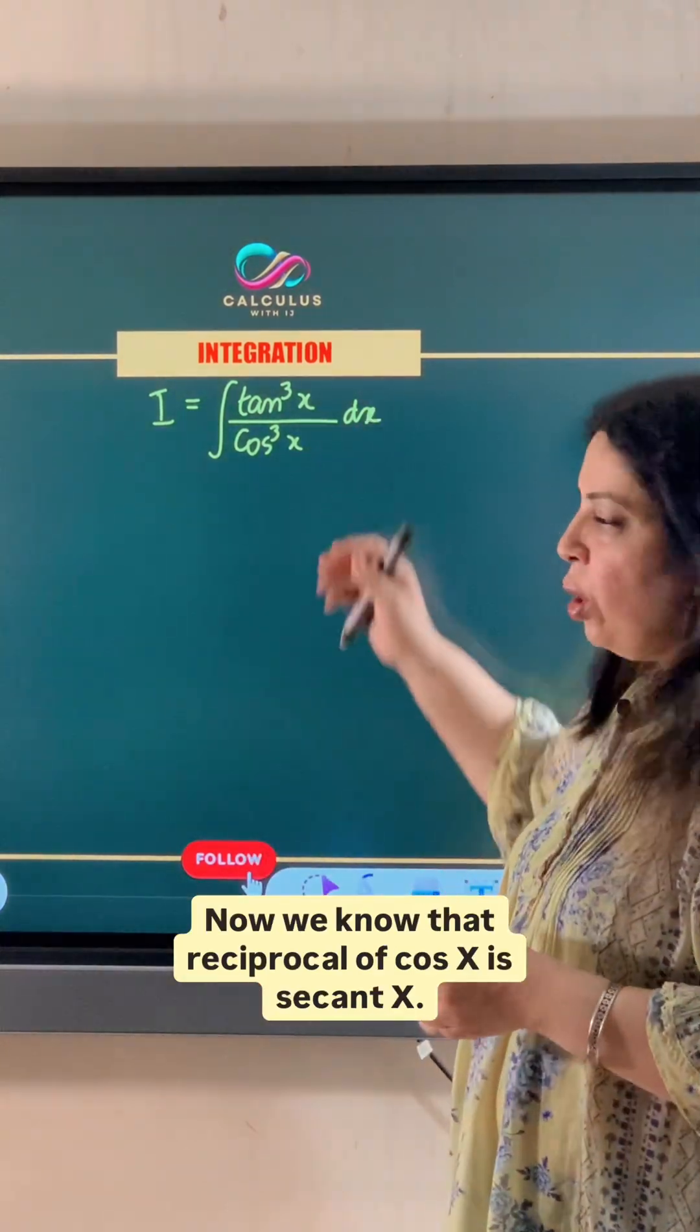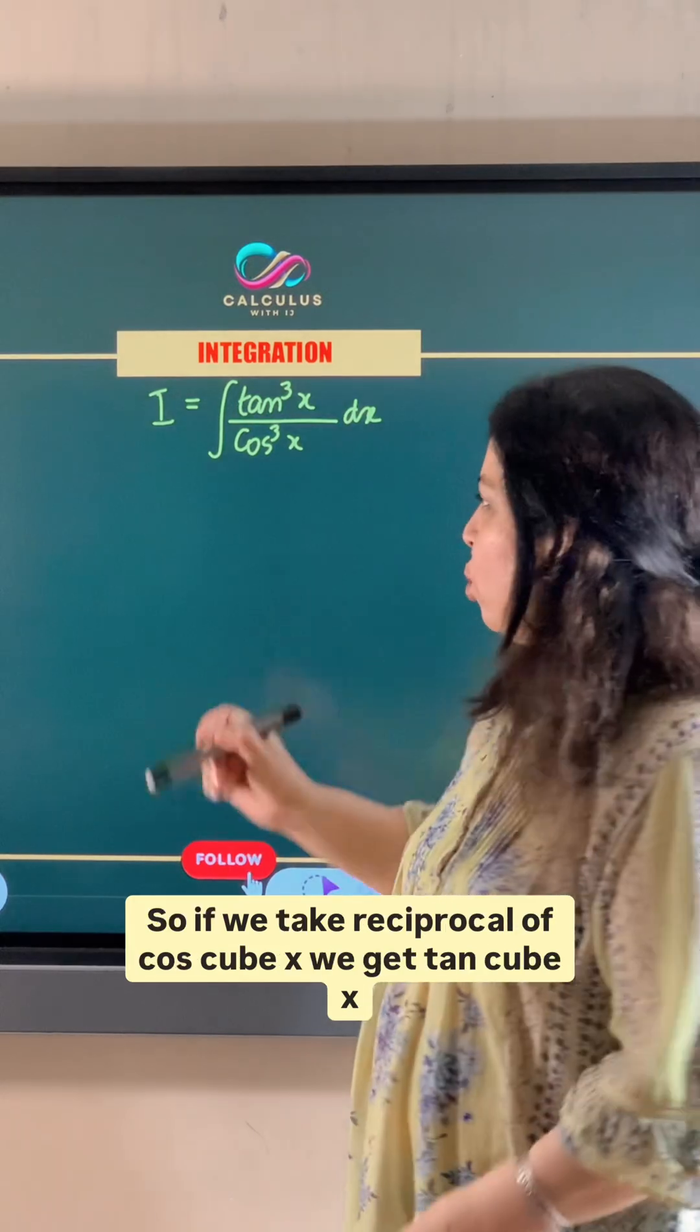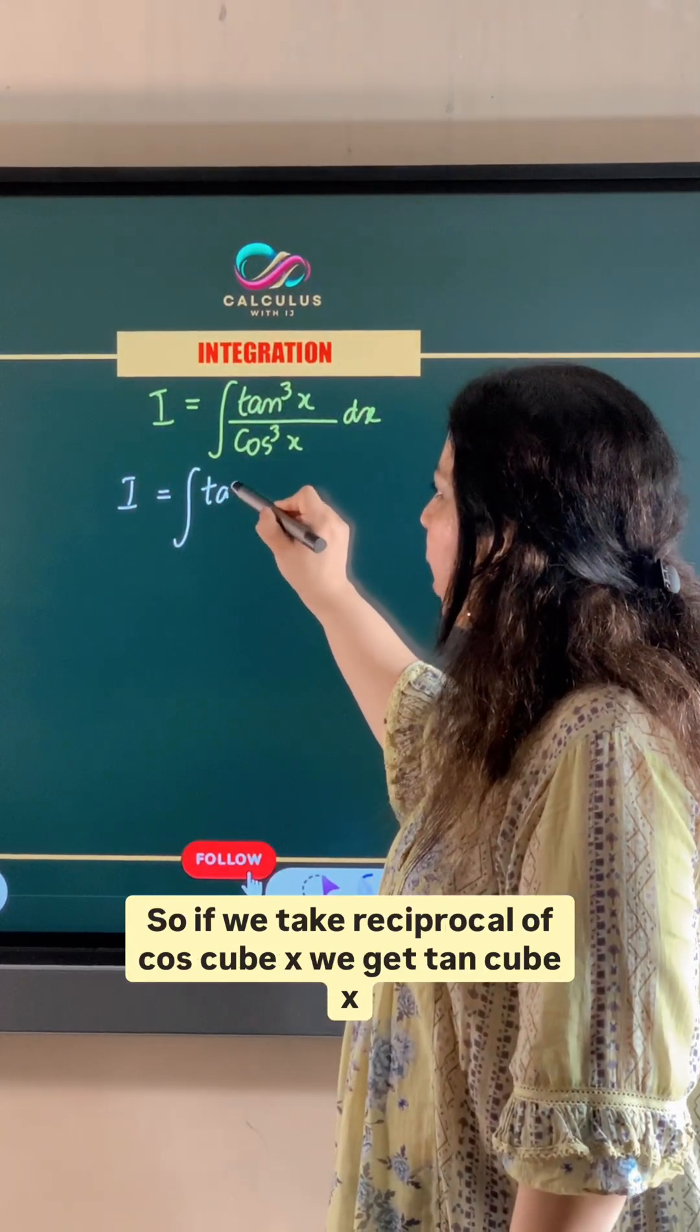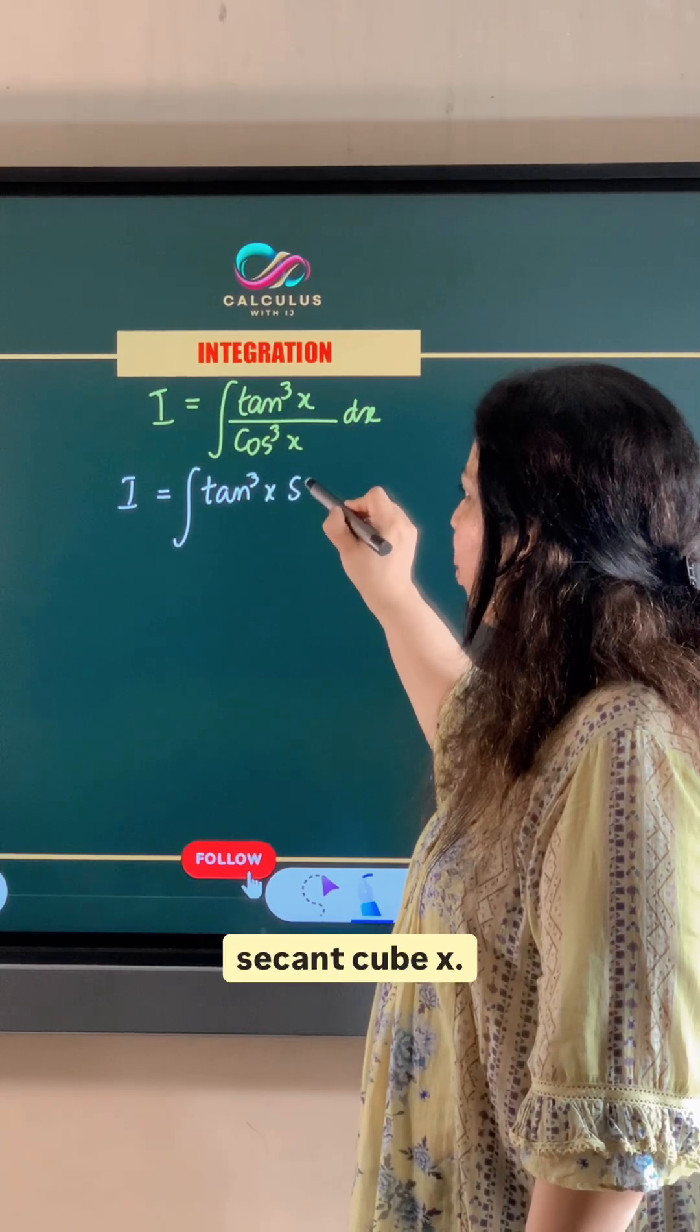Now we know that reciprocal of cos x is secant x. So if we take reciprocal of cos cube x, we get tan cube x secant cube x.